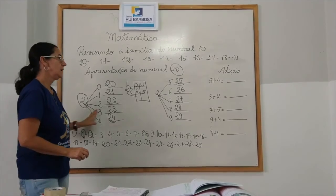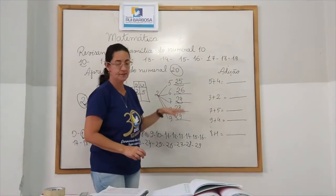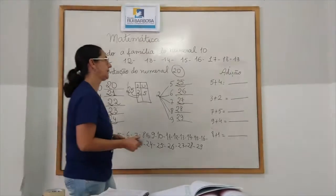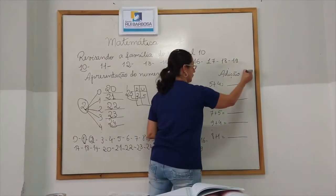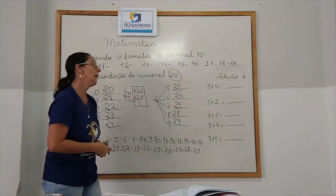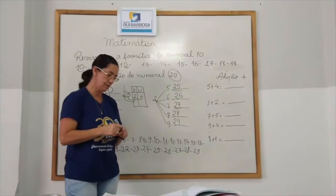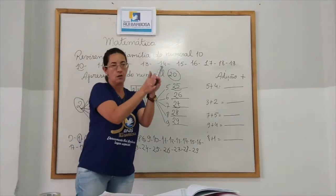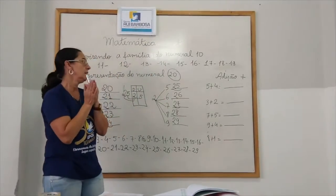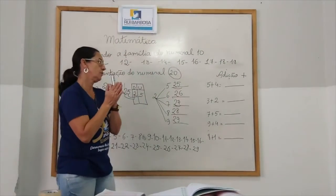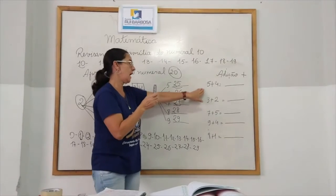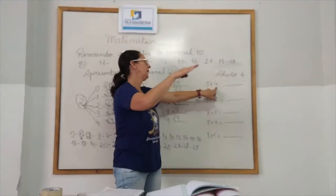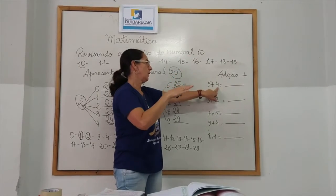Agora, nós vamos passar para uma forma bem interessante que a gente chama de adição. Adição, ela tem um símbolo, que é essa cruzinha, que se chama de mais. Adicionar, adicionar e juntar. Eu tenho uma quantidade e vou juntar com outra quantidade. Para ficar mais fácil quando vocês forem resolver, a gente vai começar a somar os números na forma horizontal. Certo?